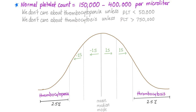We don't care about thrombocytosis unless it's more than 750,000, and it has to do with the normal distribution curve. If you are at 120,000 without any symptoms, you are not thrombocytopenic — it's just the normal distribution. Same thing if you have 500,000 platelets; doesn't mean you have thrombocytosis and you're gonna thrombose to death. It's just normal.